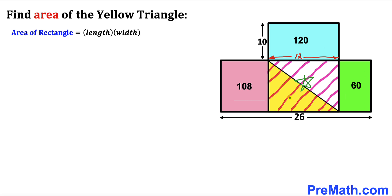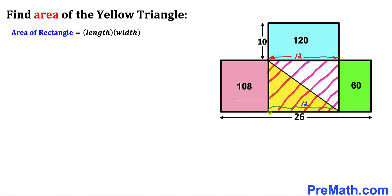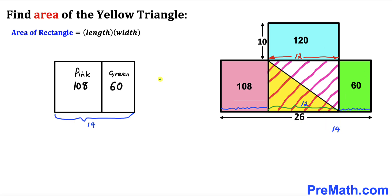Now let's focus on the whole rectangle. We know this side length is 12, so therefore the opposite side length has to be 12 centimeters as well, since we are dealing with a rectangle. We know the whole bottom side length is 26 centimeters and the side length of the middle rectangle is 12, so the remaining side length for the pink and green rectangles is 26 minus 12, which gives us 14 centimeters.